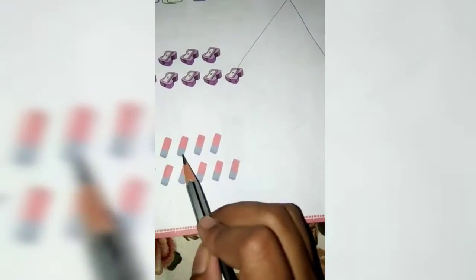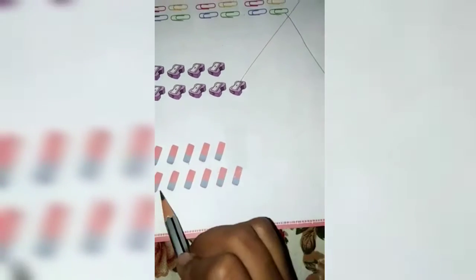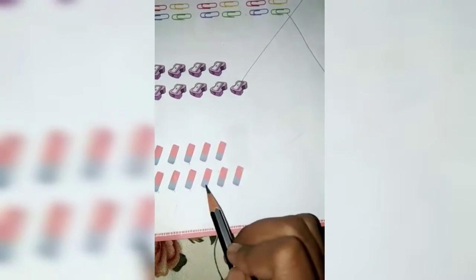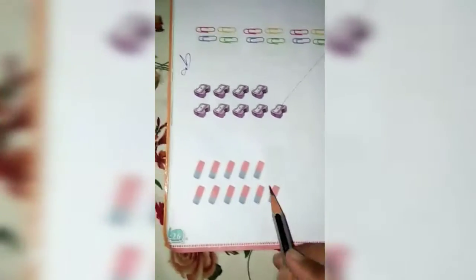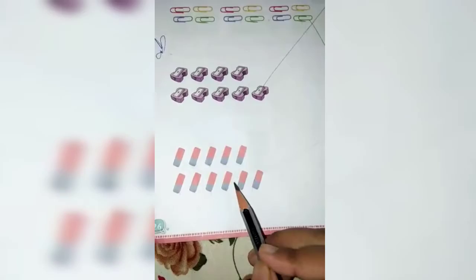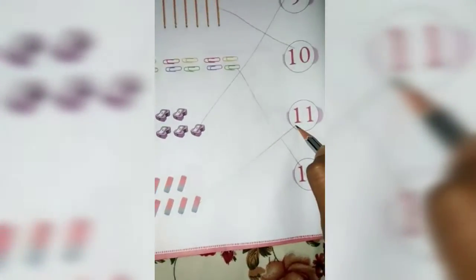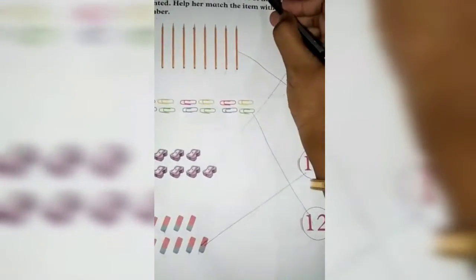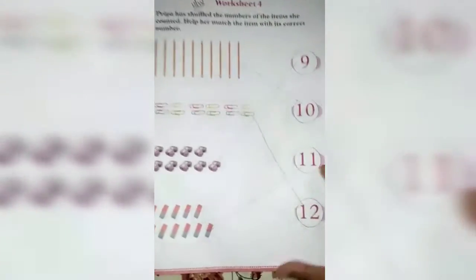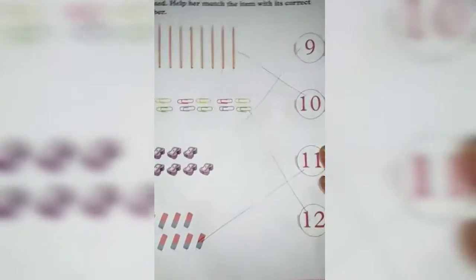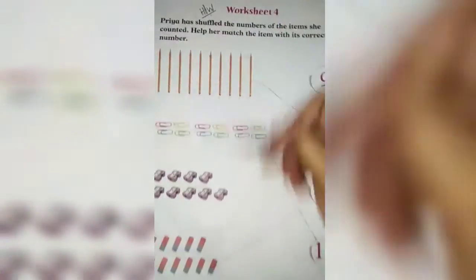1, 2, 3, 4, 5, 6, 7, 8, 9, 10, 11 — these are 11 erasers, so match with the number 11. Worksheet 4 is your today's homework. Application Book, page number 26, Worksheet 4 is your homework. Do your homework now.